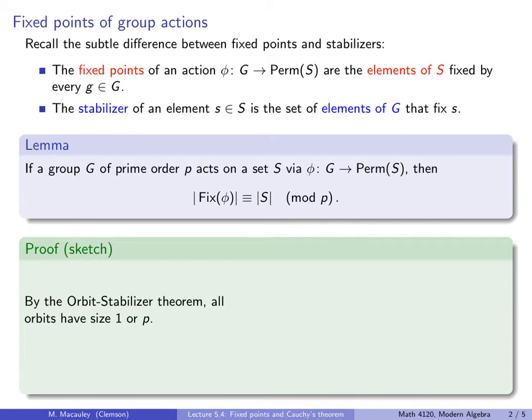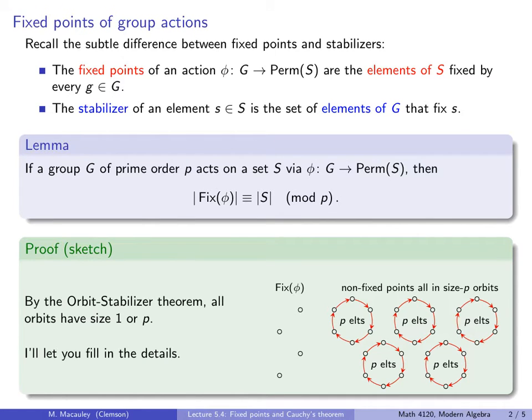By the orbit-stabilizer theorem, every orbit either has size 1 or size p. Remember the size of the orbits have to divide the size of the group, which in this case is a prime p. And primes only have two divisors, one and themselves. Here on the right is a picture of the action diagram, and since every orbit has size 1 or size p, there are some number of size p orbits here, possibly zero, but let's just say some number of them, and then everything else is a fixed point.